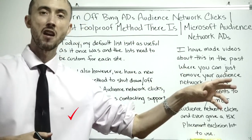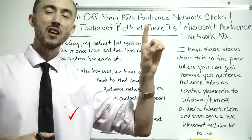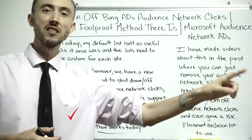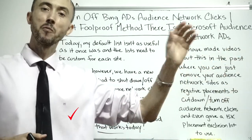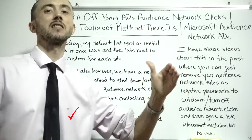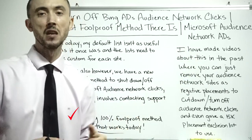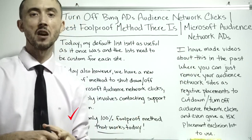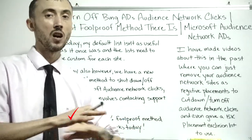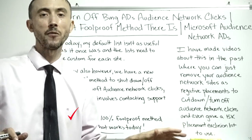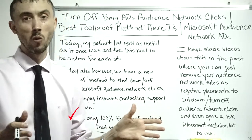You need them to confirm they've escalated the request to a high enough level and made an exception for your account to shut off the Bing audience network clicks. Once they confirm that, you are 100% cleared. After that, from that point on, those clicks should be completely off for your account.